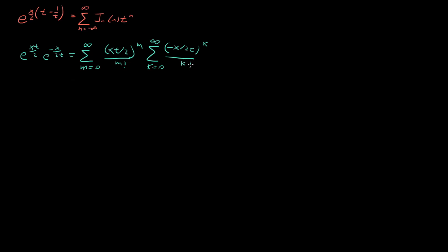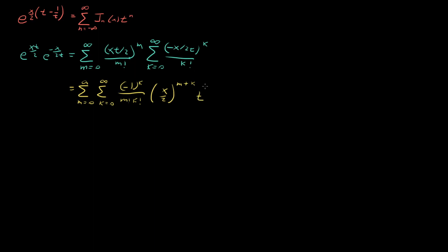We can simplify this by combining both sums: sum over m from 0 to infinity, sum over k from 0 to infinity, of (minus 1)^k divided by m factorial k factorial, times (x/2)^(m+k), times t^(m minus k). This is already encouraging because it's starting to look like a Bessel function — we have two factorials in the denominator and our x over 2.